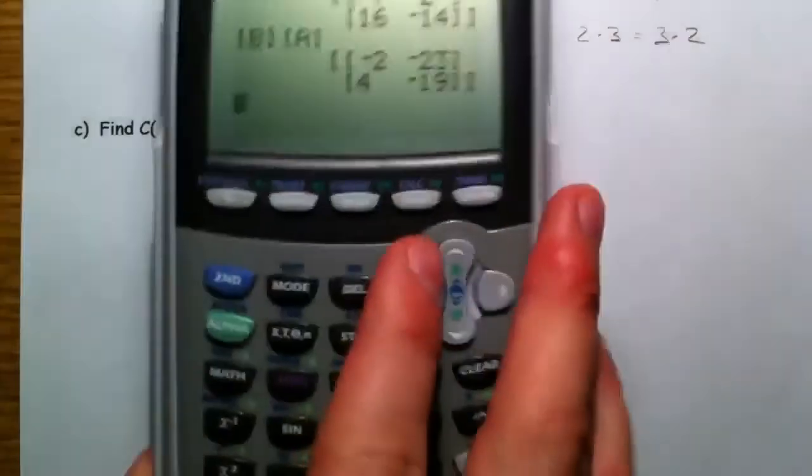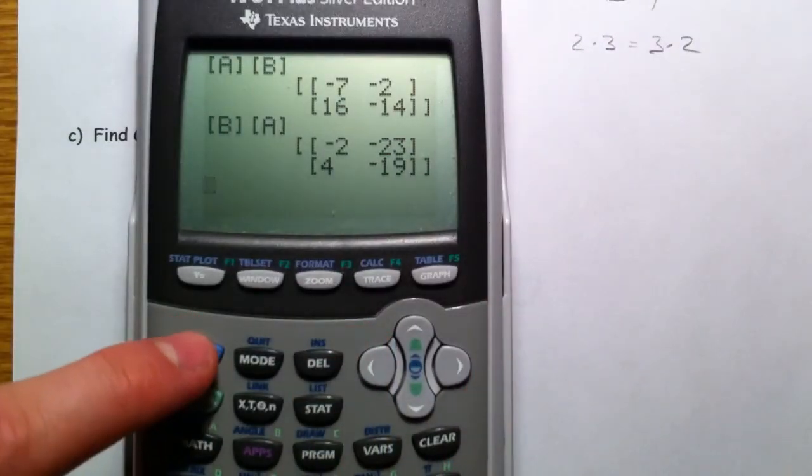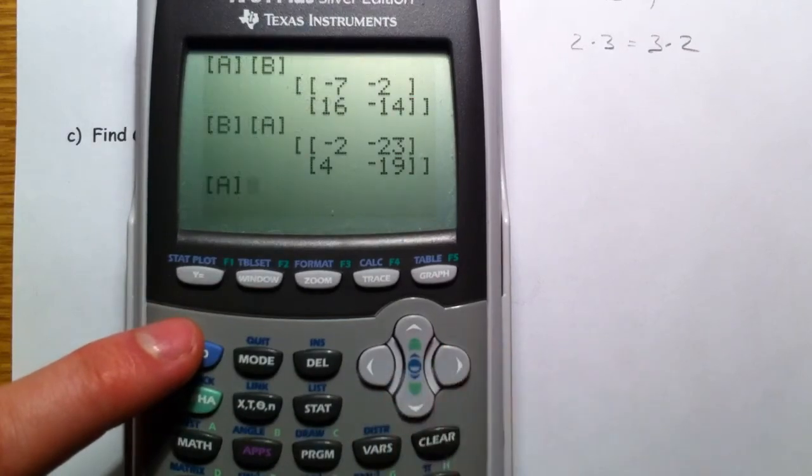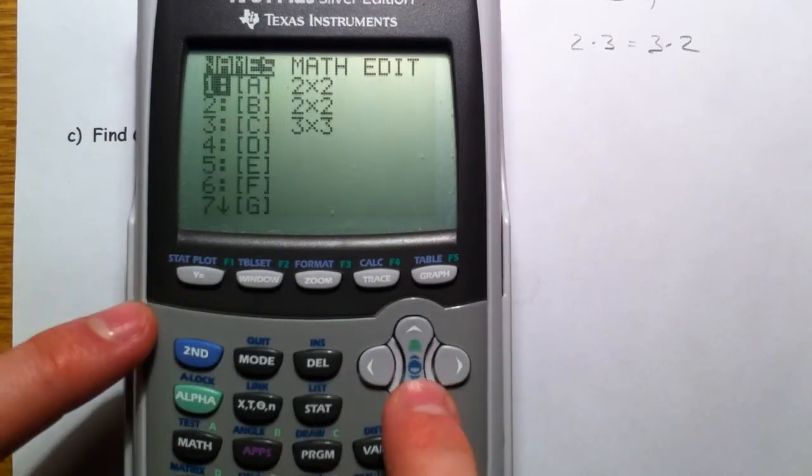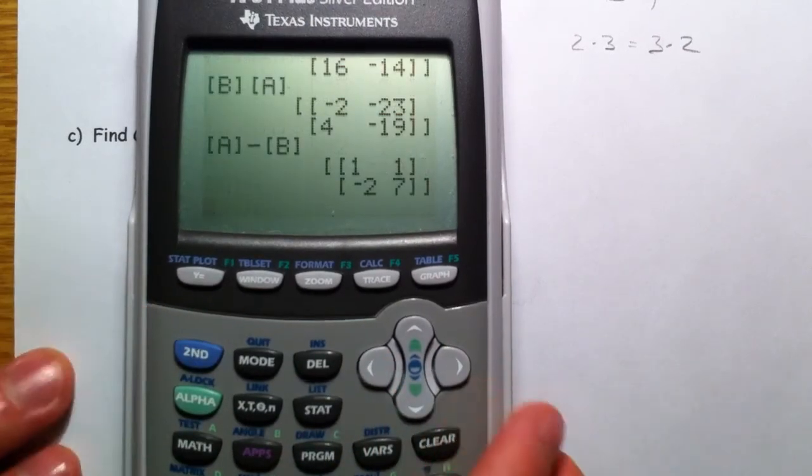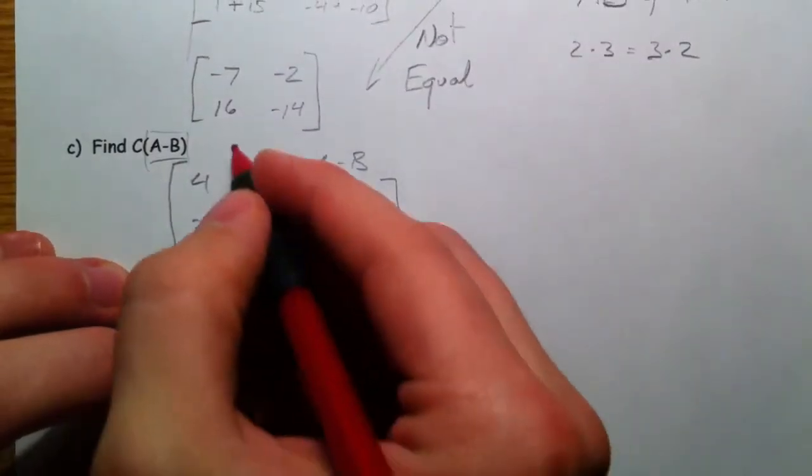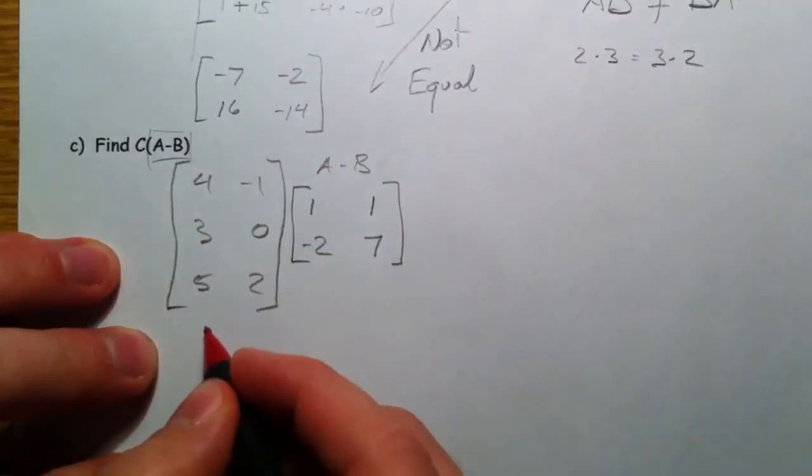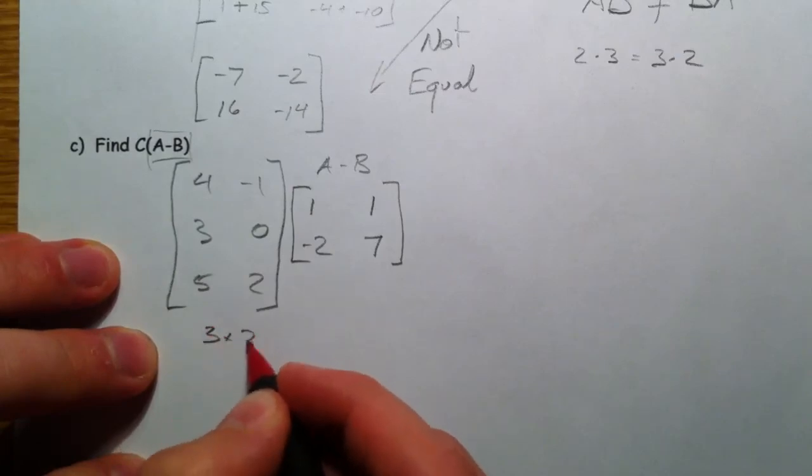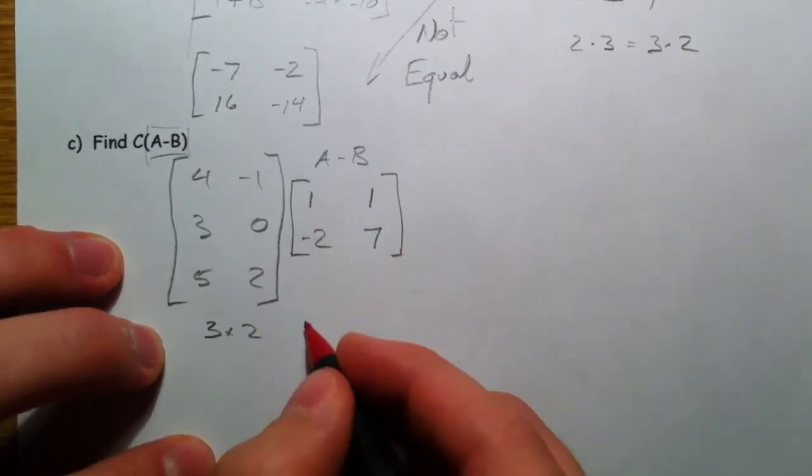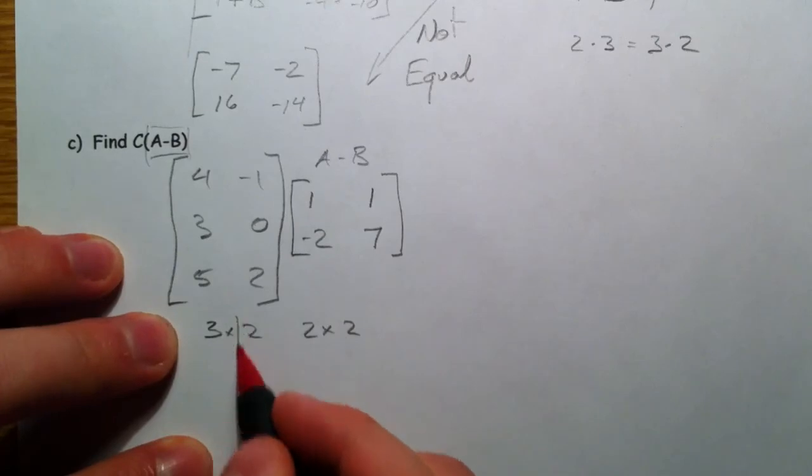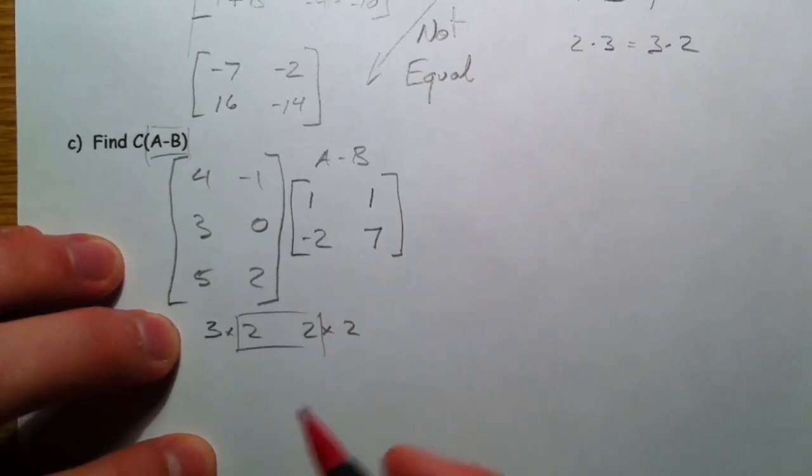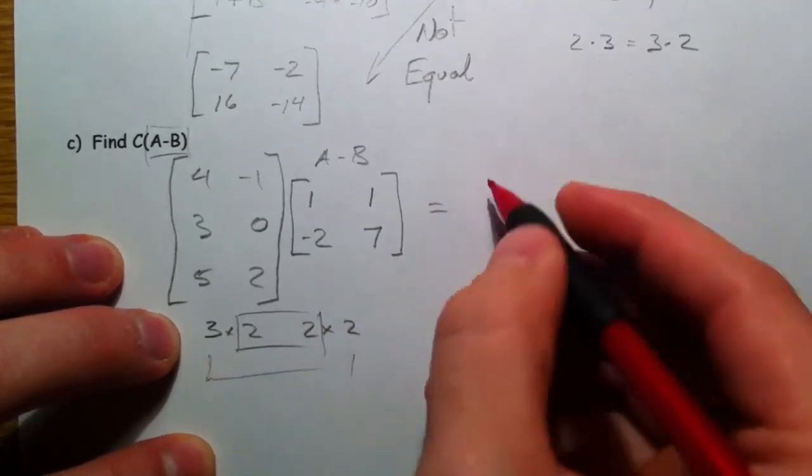And if you wanted to, we had matrix A and B in here. Matrix A minus matrix B. You can do that as well. 1, 1, negative 2, 7. So this is a 3 rows by 2 columns, and this is 2 by 2. And so as long as these match, you're good to go. And we're going to get out a 3 by 2.